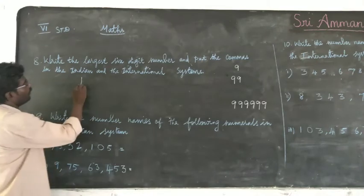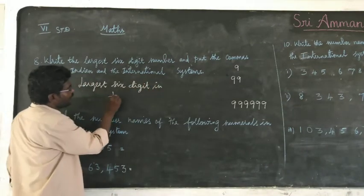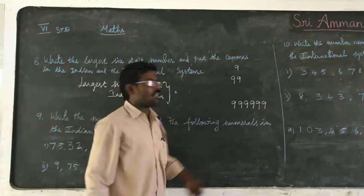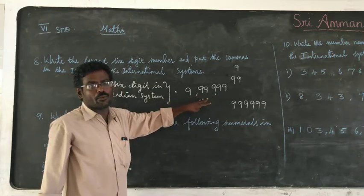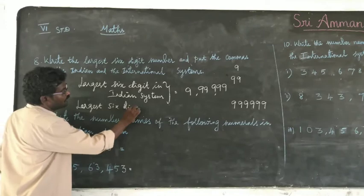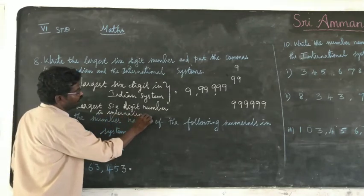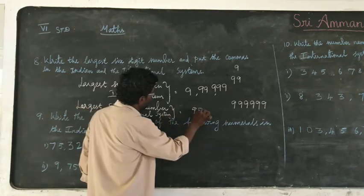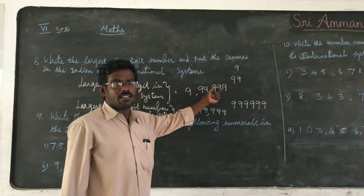Okay, largest 6-digit number in Indian system. In Indian system, put the commas after 3 digits from the right, then after every 2 digits. For international system, put the commas after every 3 digits. So in Indian system: 3, then 2; in international system: 3, then 3.